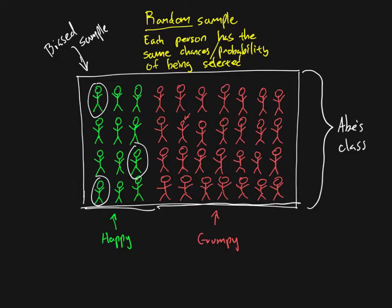A random sample in general is going to tend to remove bias from my sample if I select people randomly. But there's a very important principle here, which is that the size of that sample really matters — sample size matters.